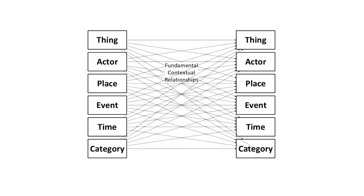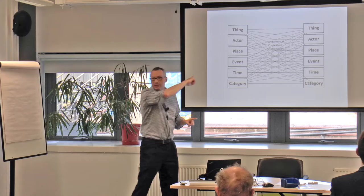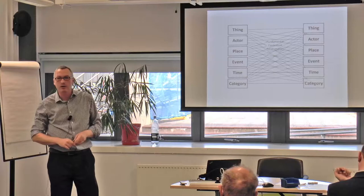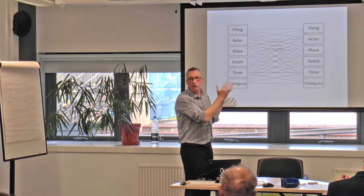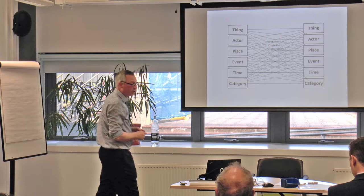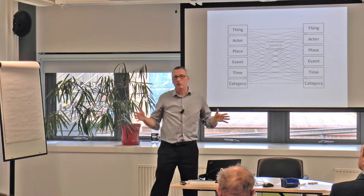We can start taking the entities within that data — whether it's the object, actor, place, event, time or category — and create a matrix of relationships across these things, which are much more sophisticated than any collection online system. This can actually start helping research environments. We can start using the power of computers to start interpreting some of this and bring to the fore research questions that maybe we've never thought of before.